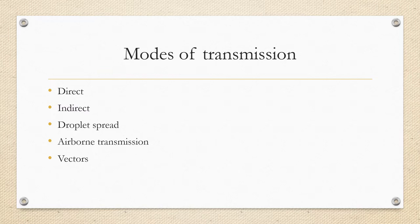In airborne transmission, infectious agents are carried on dust or suspended in the air, and air currents spread the infectious particles. Vectors include mosquitoes, fleas, and ticks that mechanically transmit pathogens, while Plasmodium is a biological vector where different stages of the life cycle occur inside the insect gut.